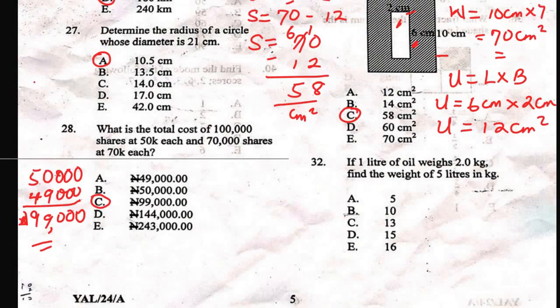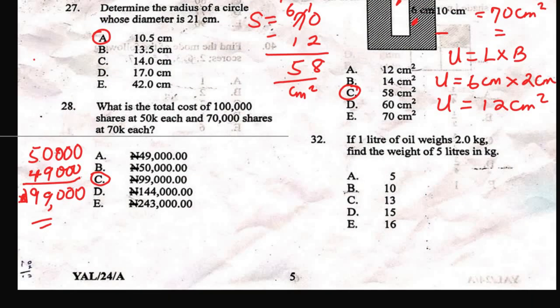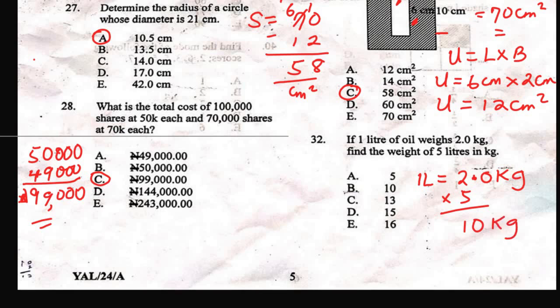Question 32: if 1 liter of oil weighs 2.0 kilograms, find the weight of 5 liters. You multiply by 5, giving 10 kilograms. The right answer is B.